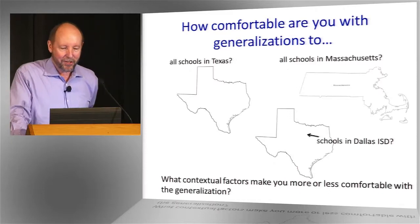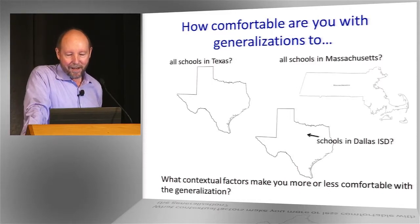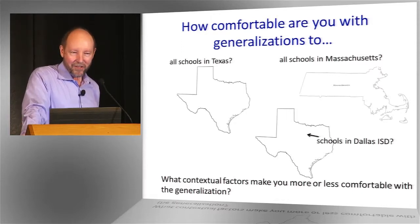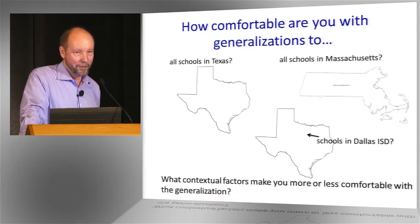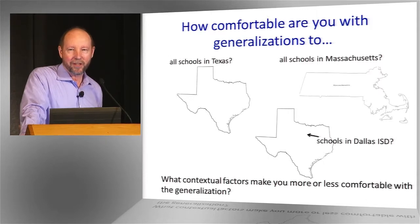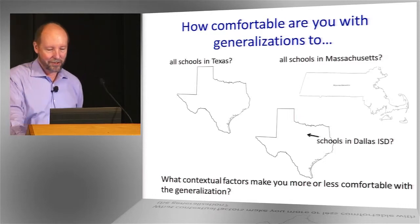So you could ask the question, how comfortable would we be with generalizations to say all the schools in Texas? What about Massachusetts? The study was carried out in Texas — there's no way Texas schools could be a probability sample of Massachusetts schools. Nonetheless, we might decide it's not implausible that at some point the results did have something to say about education in Massachusetts.